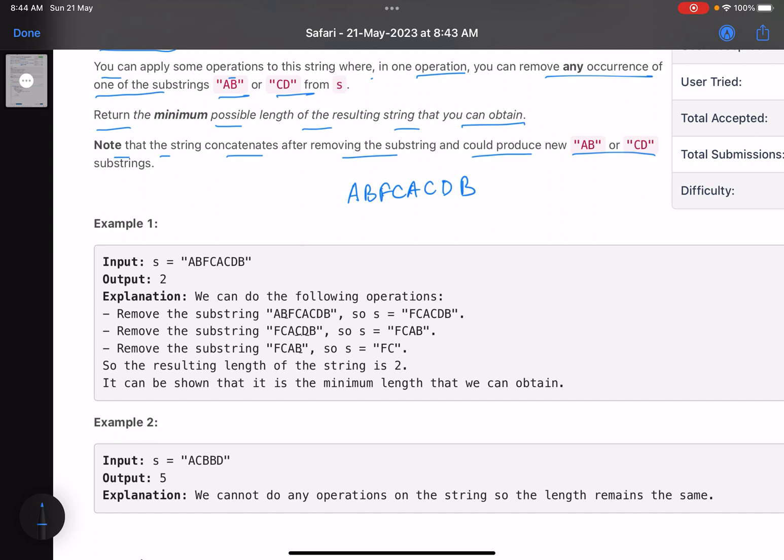Just see what we can remove. We can remove either a combination of AB or CD. So this AB is removed, this CD is removed. What is the new string you get? FCAB. Again this AB is removed. Finally you are left out with FC. You cannot remove either AB or CD, hence your answer will be 2, the minimum length of the string that remains.